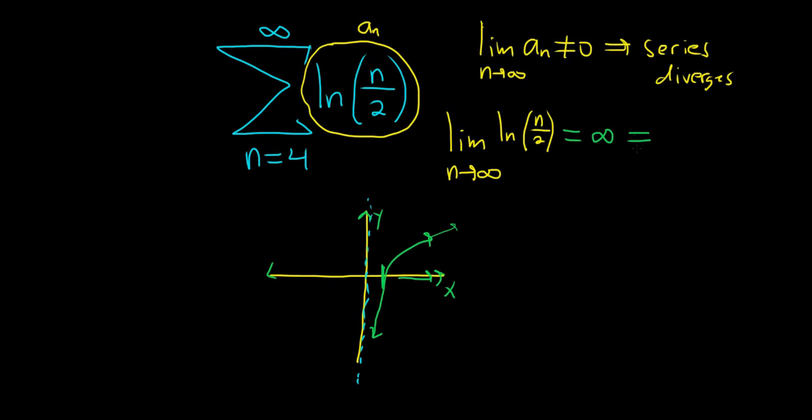which is not equal to 0. So the series diverges by the nth term test. And that's it. I hope this video has been helpful.